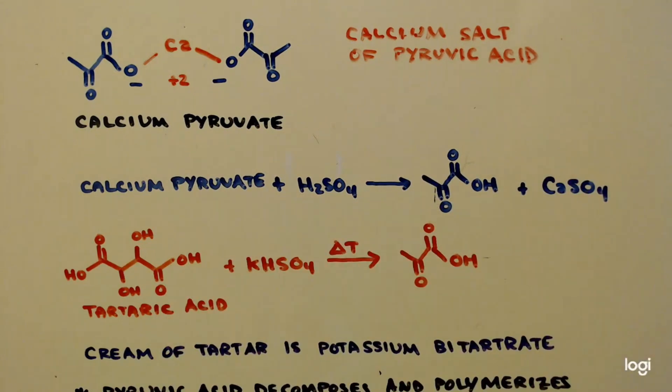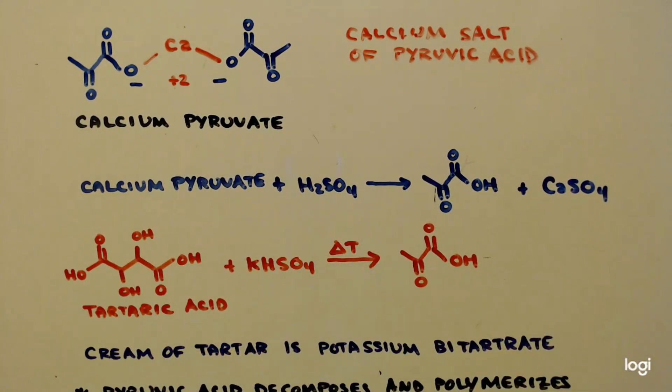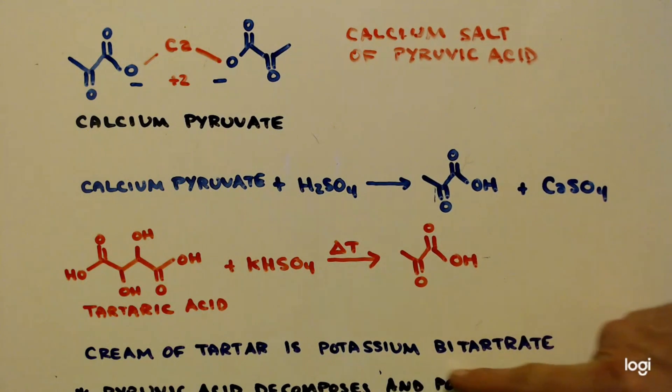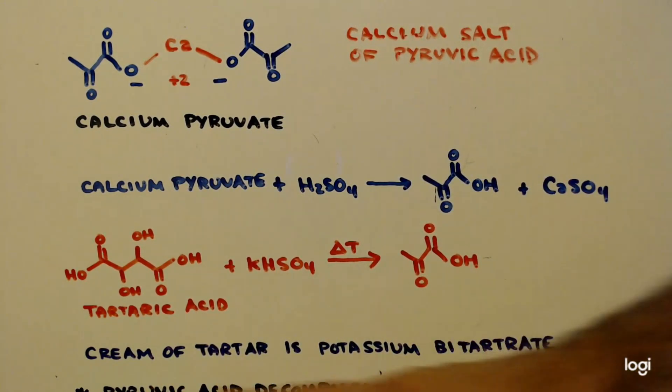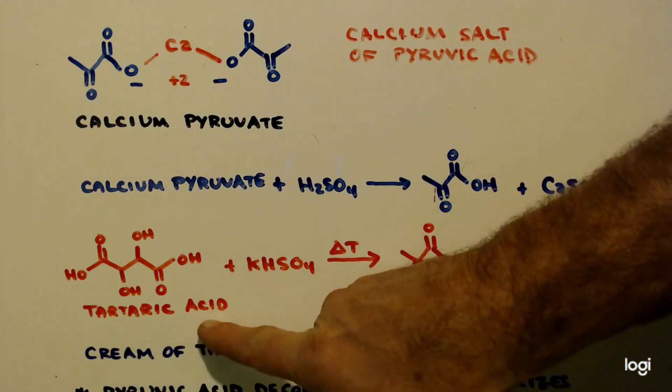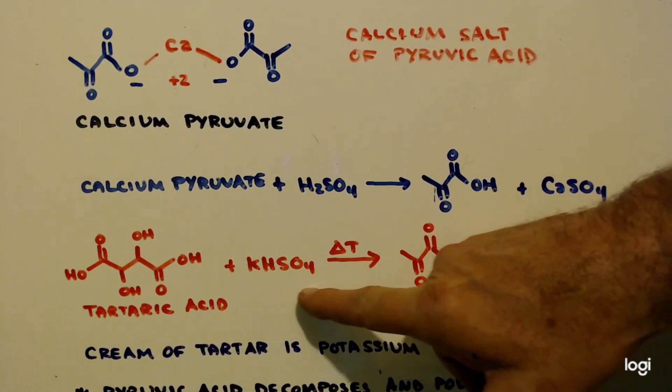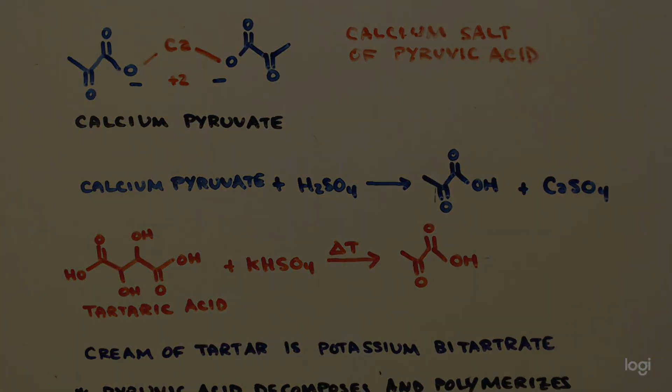If you wanted to make tartaric acid, you buy some cream of tartar. And how do you make the acid? You drip a strong acid onto the salt. This is the salt of the acid you want. So you would get some potassium bisulfate, cream of tartar. You would drip some sulfuric acid on it, and boom, you've got tartaric acid. Mix that with the potassium bisulfate, heat it up, and boom, you've got pyruvic acid.